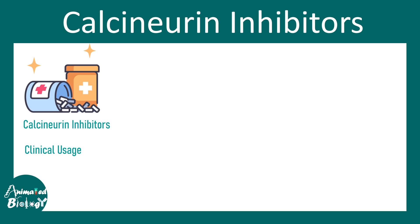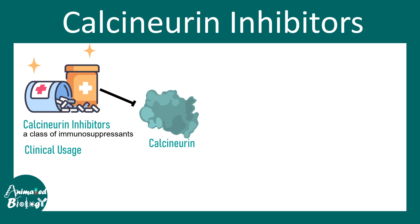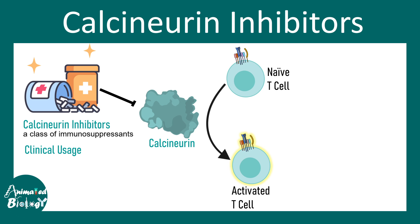The first category of drugs we are going to talk about is calcineurin inhibitors, which inhibit a molecule known as calcineurin — a calcium-dependent phosphatase whose job is to remove phosphate groups. Calcineurin is involved in the process of T cell activation, so once calcineurin is blocked, T cell activation is blocked.